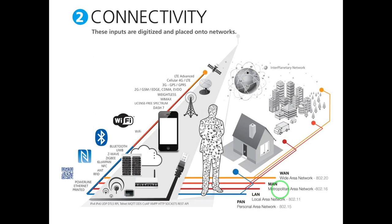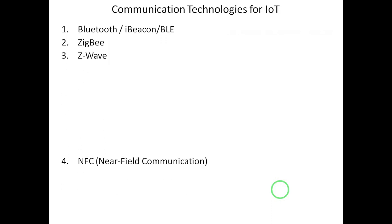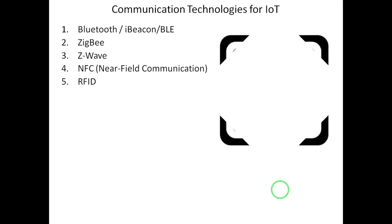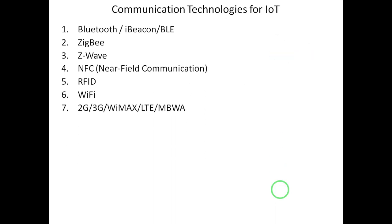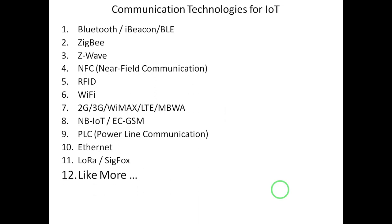Connectivity protocols also play a major role in IoT. These include Bluetooth, Zigbee, Z-Wave, Near Field Communication, RFID, Wi-Fi, 2G, 3G, WiMAX, LTE, Mobile Broadband Wireless Access, NB-IoT, NB-IoT Extended Coverage, GSM, Powerline Communications, Ethernet, and non-cellular-based low-power wide area networks such as LoRa and Sigfox, among a few more. In the next session we will have detailed discussions about communication technology for IoT.